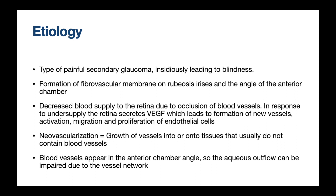Due to those primary conditions, the eye does not receive enough nutrients and oxygen. As a response to this undersupply, the retina secretes vascular endothelial growth factor, short VEGF, and interleukin-6. They are messenger substances which lead to the formation, migration, and proliferation of endothelial cells and formation of new blood vessels.